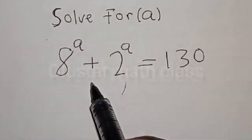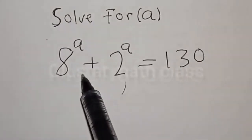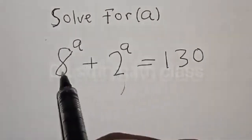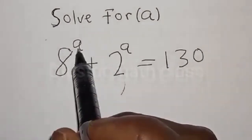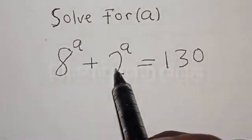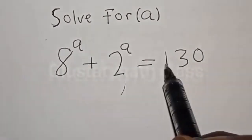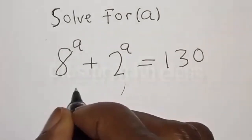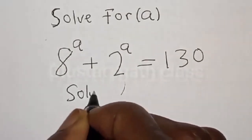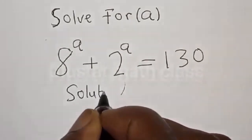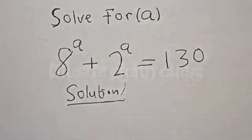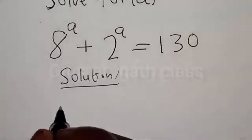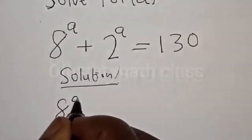Hi everyone. We want to find the value of a from this given exponential equation. We have 8 raised to power a plus 2 raised to power a is equal to 130.